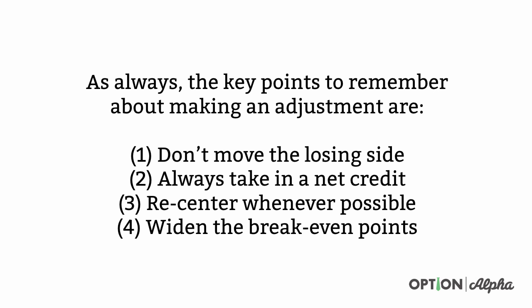As always, the key points to remember about making adjustments are: don't move the losing side. Always take in a net credit — we never want to be adjusting trades and paying money to do so as option sellers. Recenter the trade whenever possible, which means acknowledging that the stock has made a higher or lower move, and by making an adjustment, we try to recenter the stock in the middle of our new breakeven points. And number four, we want to widen the breakeven points, which naturally happens as we take in a higher and higher credit.